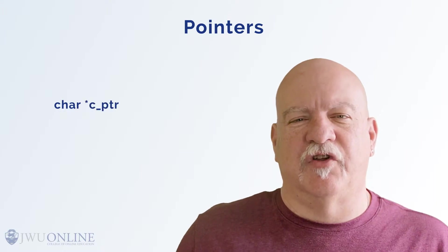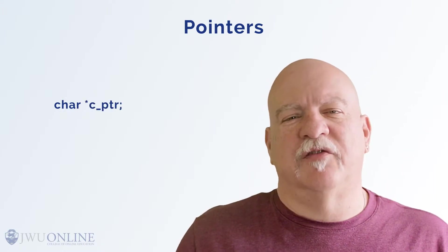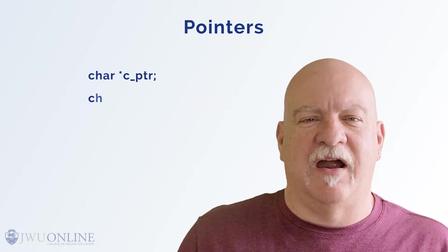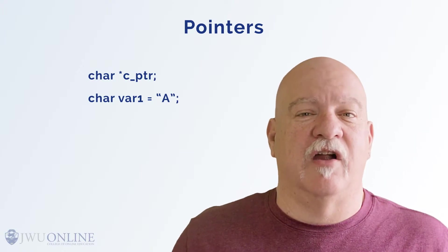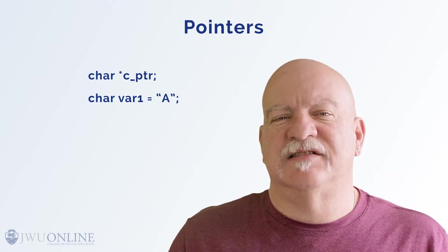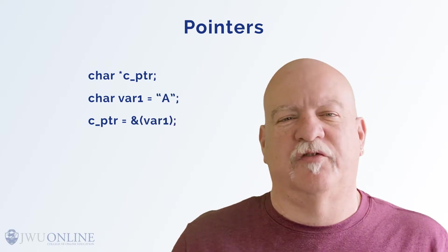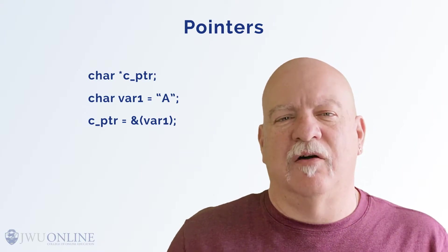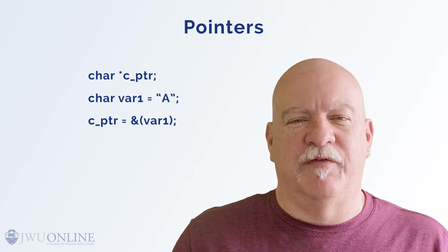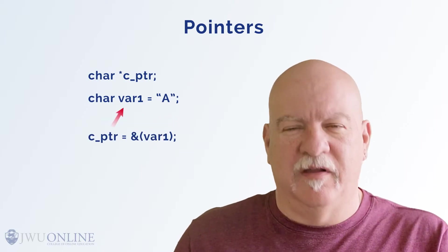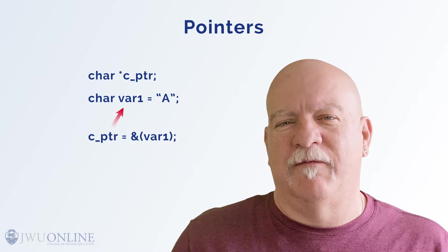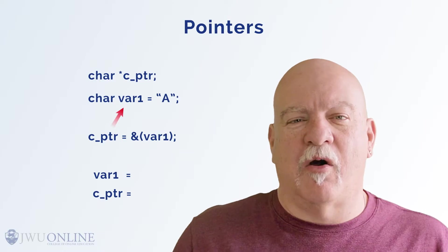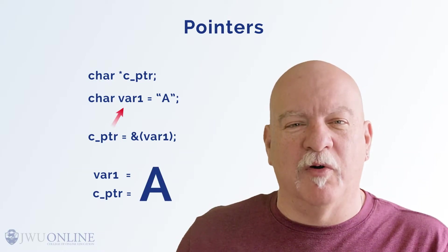Consider char* c_pointer — this creates a pointer to a character type. Later, I can do something like: char var1 = 'a', and then say c_pointer is assigned the address of var1. Now c_pointer holds the address of var1 and thus it points to it. So the value of var1 and the value at the location of c_pointer are both 'A' because they both point to the same thing.